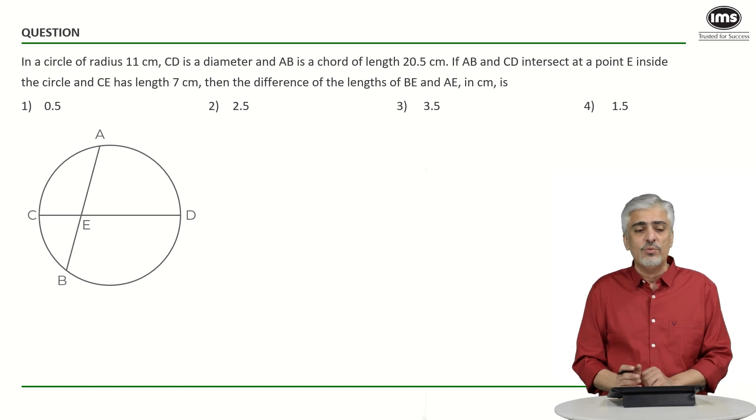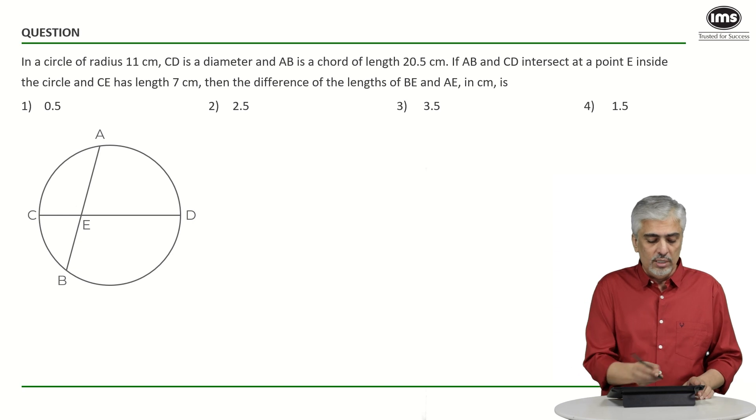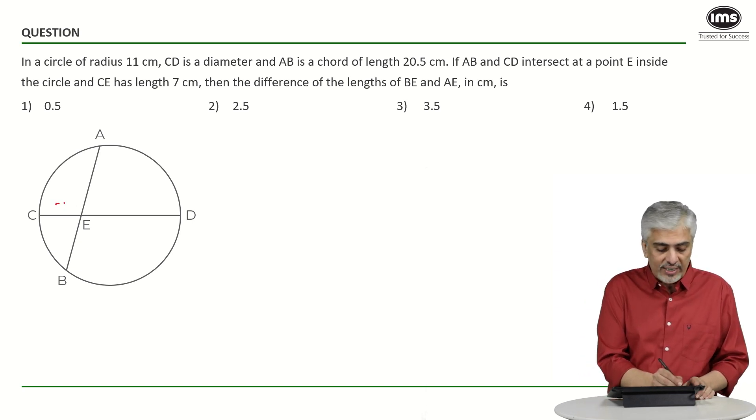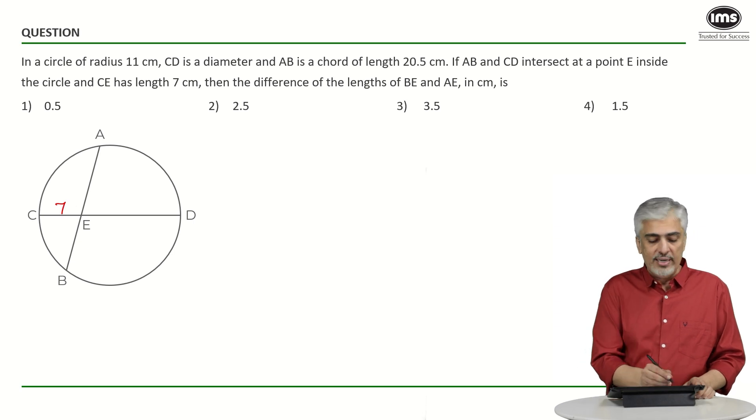Let's continue with what values we know. The radius is 11, so diameter CD is 22. CE is 7, so if I take this as 7, then 22 minus 7 means DE will become 15.